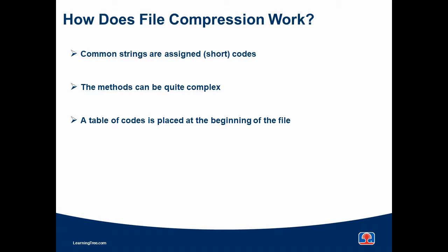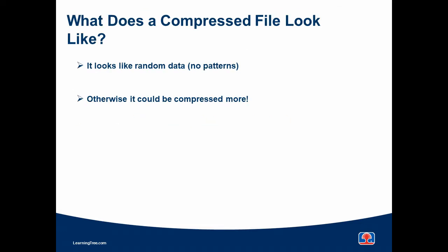Once those codes are computed, a table of them is placed at the beginning of the file. What does a compressed file look like? At the beginning is that table of strings, and the remainder of the file is the original data with those strings replaced. If it's well compressed, it will look like a very random file — otherwise, it could be compressed more.